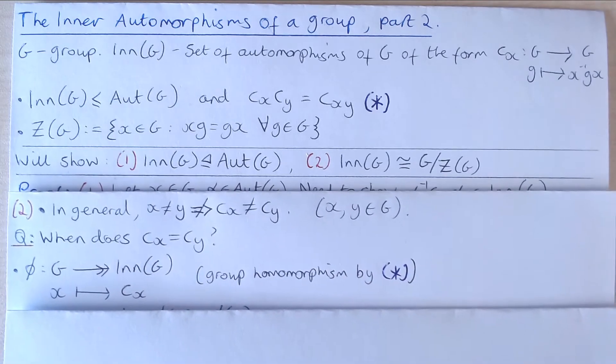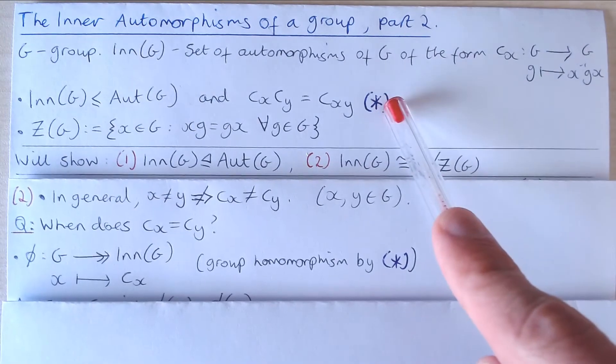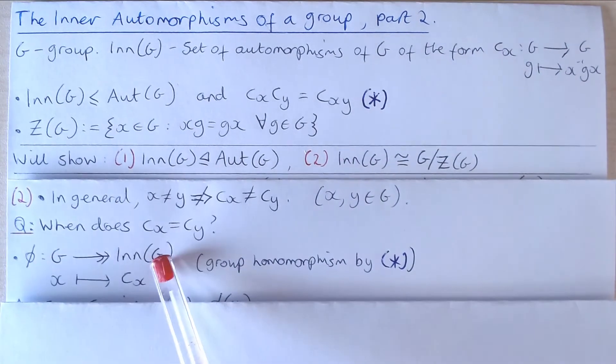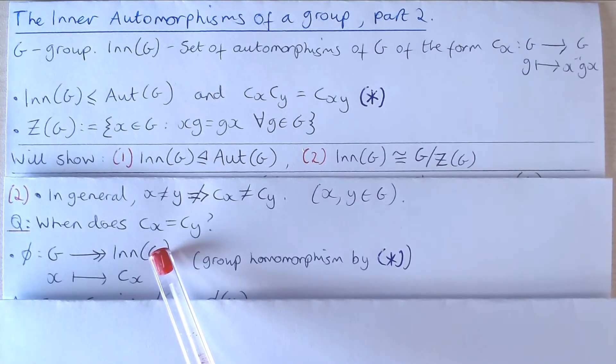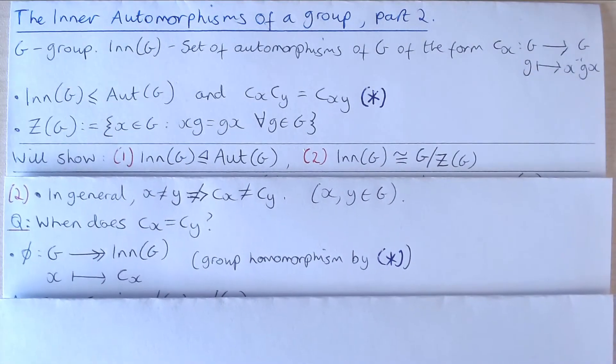An answer can be found by considering that this property star here gives rise to a group homomorphism from G to its inner automorphisms which is automatically surjective by the definition of the set of inner automorphisms.